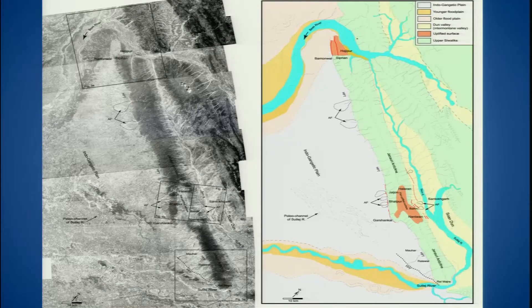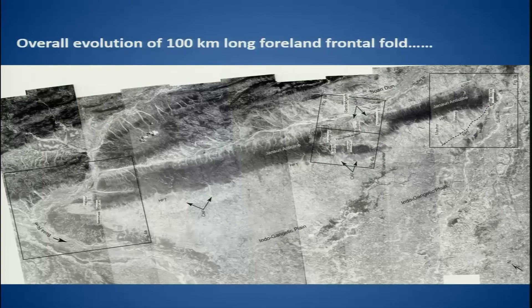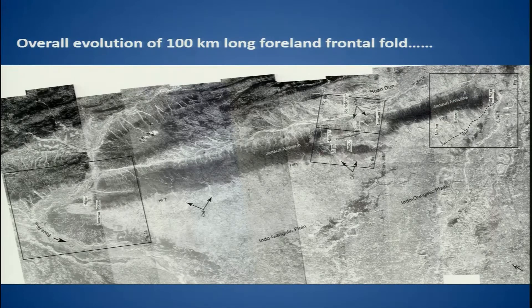Welcome back. In the previous lecture, we discussed fold growth and segmentation. Before we get into detail of this part — the northwestern portion of the Janowri anticline — I will explain in two slides how the interaction of the two segments took place. If you look at the overall topography, this portion is the segment of linkage between the two segments of the Janowri anticline, and when it linked up, it resulted in the formation of a 100 kilometer long fold range.